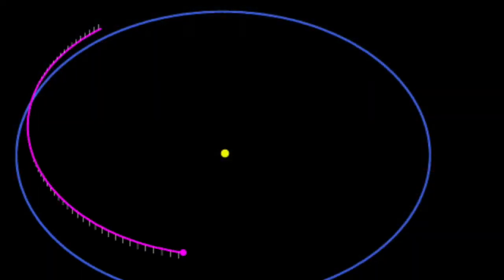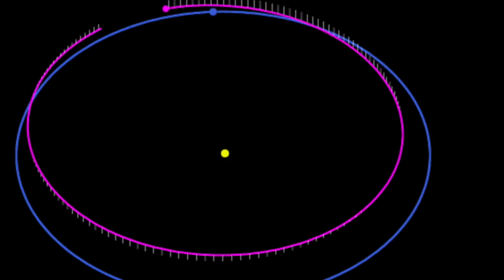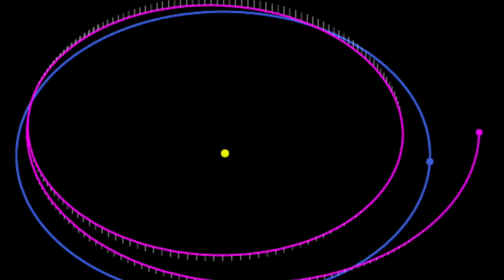An asteroid called Apophis caught the attention of astronomers in 2004 when initial observations of its orbit suggested there was up to a 2.7% chance that it would hit Earth in April 2029.